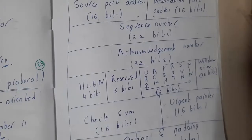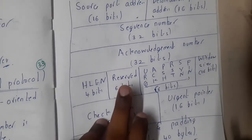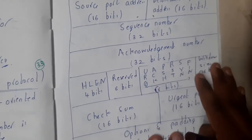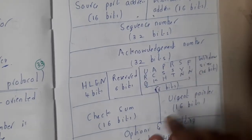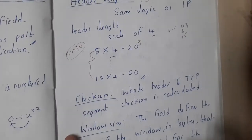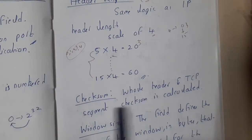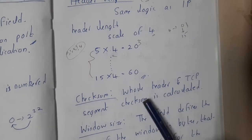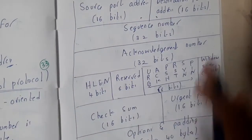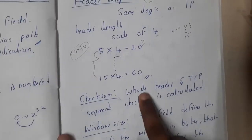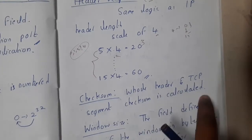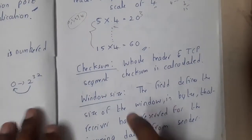After that we have some reserved bits — we'll keep those aside for now. Then there is the checksum, which everyone should know — it is calculated for the whole TCP header and the entire TCP segment.